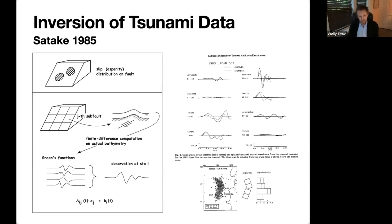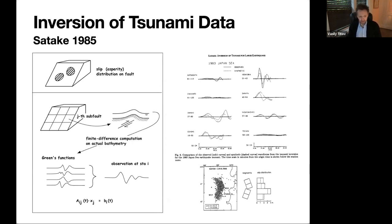Instead of just a single CMT point-source solution, you can find the distribution of slip along the finite fault. That was quite a novel approach at the time. His first attempt was the 1983 tsunami in the Sea of Japan. The data on the upper right shows the comparison — all paper recordings he had to digitize manually — matched against the best combination of Green's functions, solved with a least-squares approach.